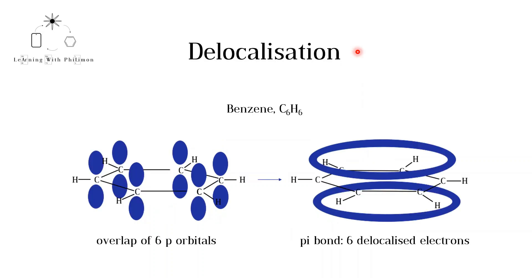The formation of pi bonds allows for the delocalization of electrons across part or all of a molecule. For example, in benzene, C6H6, discussed in the previous video, Resonance, the p orbitals from each carbon atom, perpendicular to the ring,